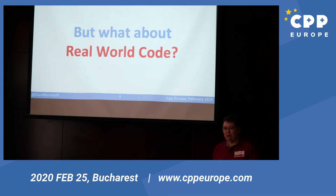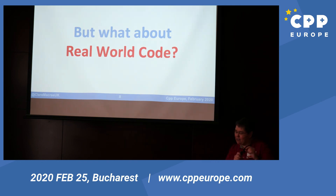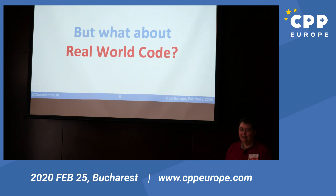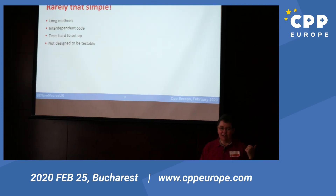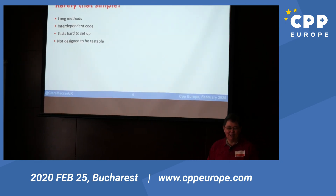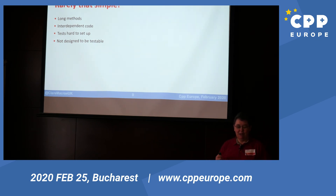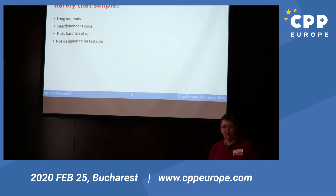But what about the real world? My code is never that simple, or maybe only a tiny proportion of the code I have to test is simple. Maybe I've done the easy stuff — what about the rest? Maybe you've got long methods. Somebody talked earlier about a class that had half a million lines of code — that's boggling. Maybe you've got dependencies you can't separate, or the tests are hard to set up. Lots of reasons why it's not that simple.